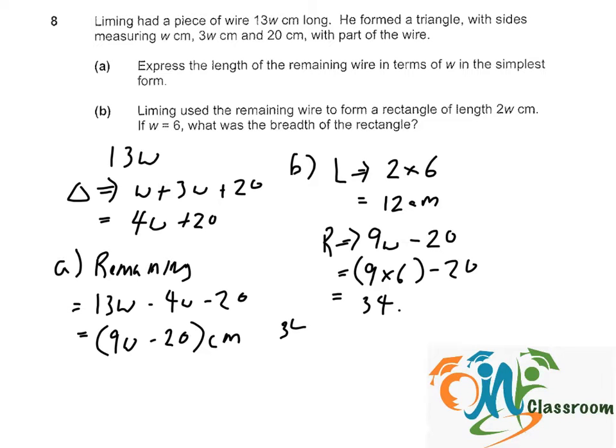So 34 minus the 2 lengths, minus 12, minus 12, we will have 10 cm left. And this 10 cm will be the 2 breadths, and the breadth will be equal to 10 divided by 2, 5 cm.